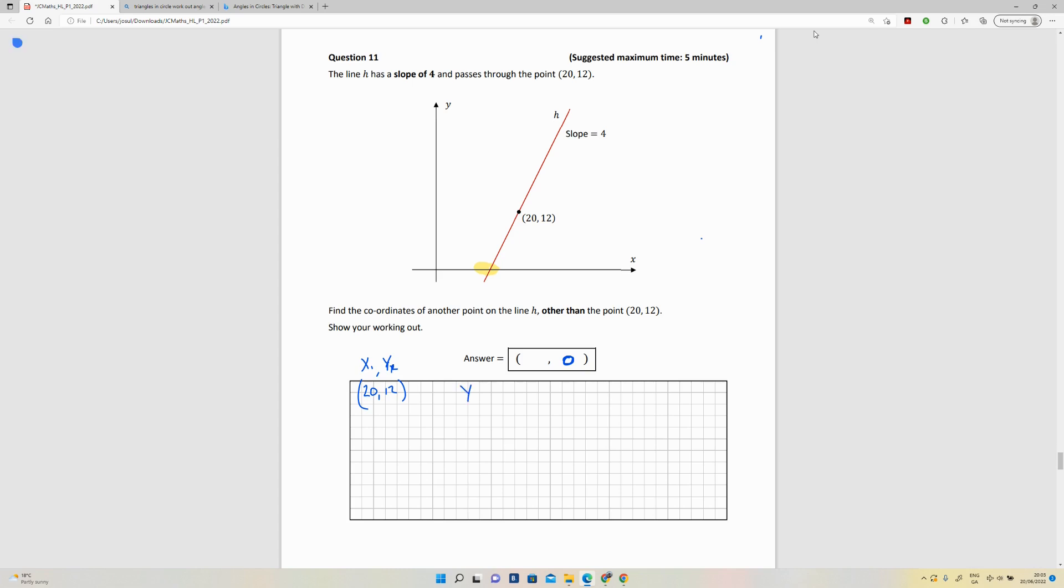So if we use the formula y minus y1 is equal to the slope, which is m, times x minus x1, and then plug in my values that I have here, I've got y minus 12 is equal to 4 times x minus 20.